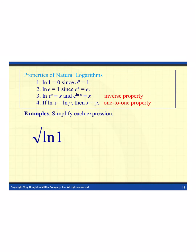Now our natural log properties, which parallel regular log properties. Property 1: ln(1) equals 0, because anything to the 0 power equals 1. Property 2: ln(e) equals 1, because e to the first power equals e. Property 3 (inverse): ln(e^x) simplifies to x, and e raised to ln(x) simplifies to x — natural log and e are inverses of each other. Property 4 (one-to-one): if ln(x) equals ln(y), then x equals y.